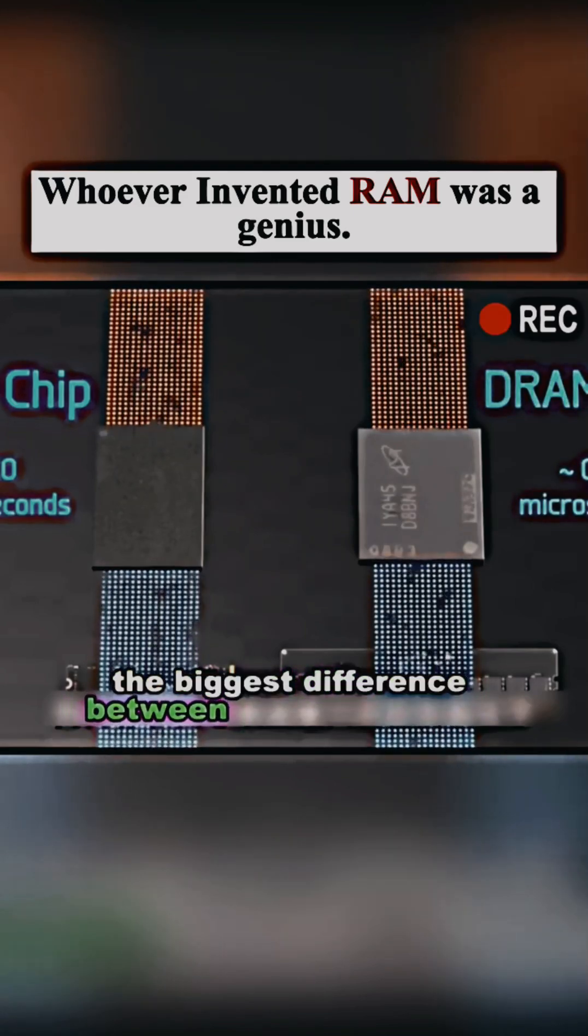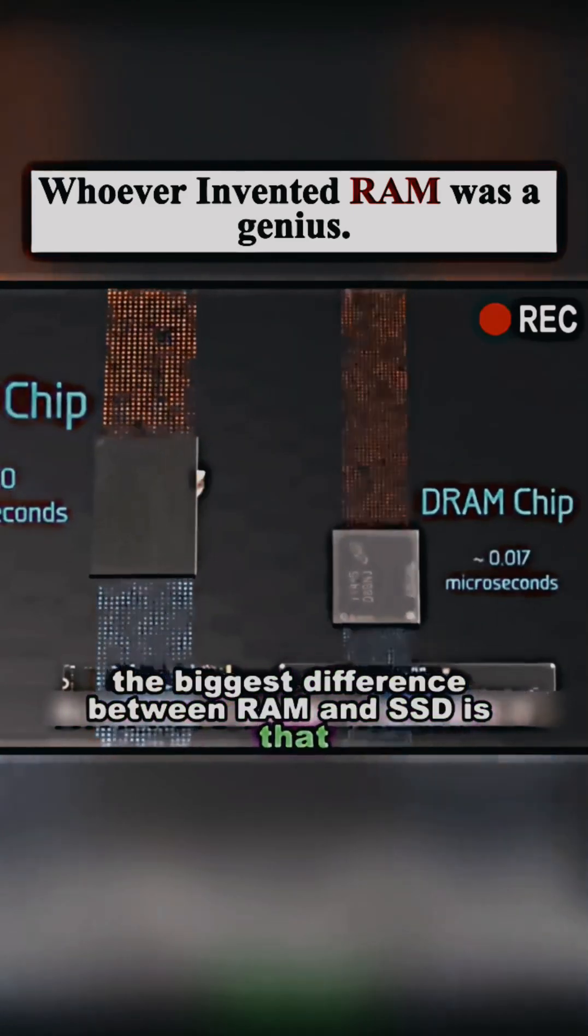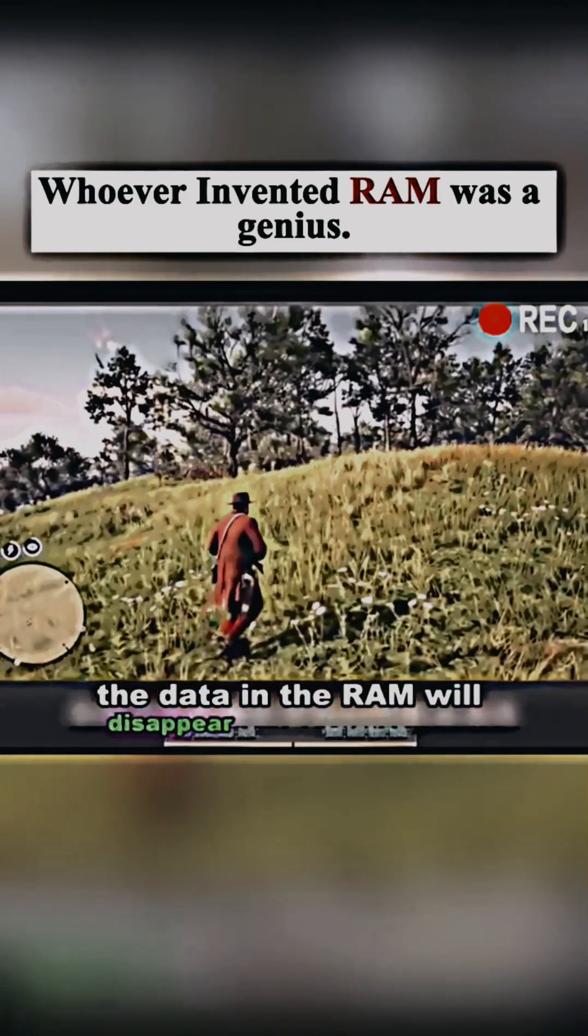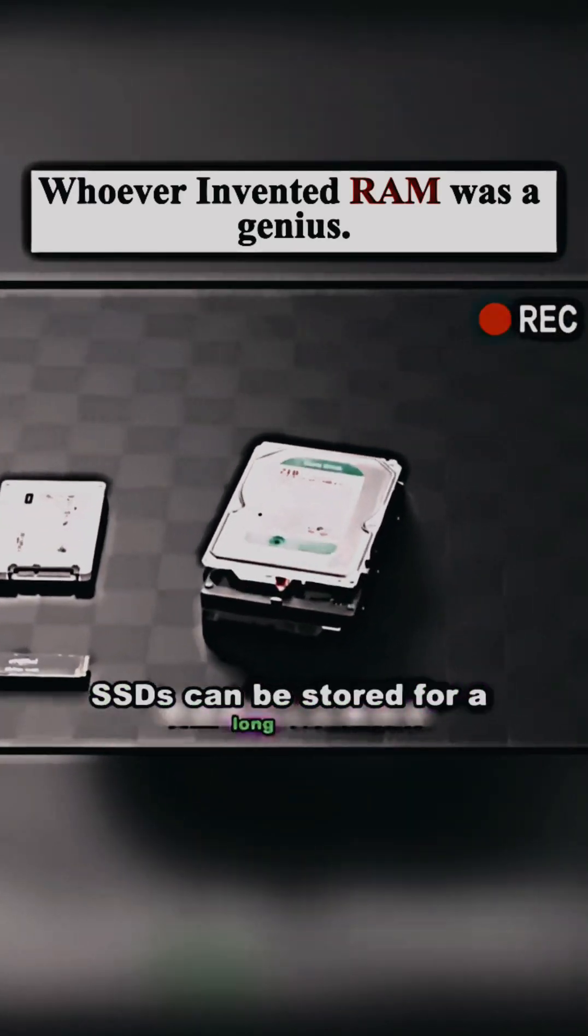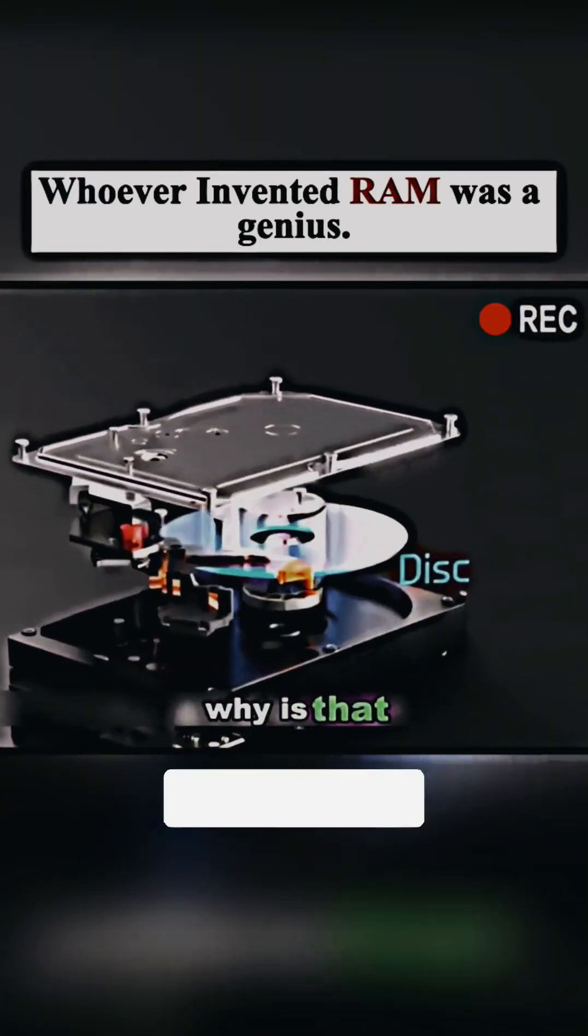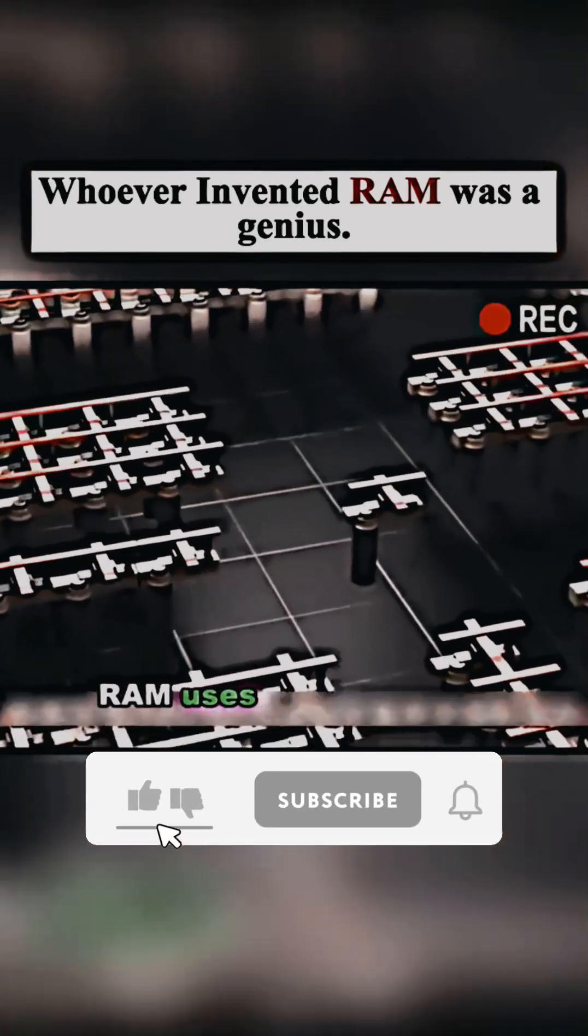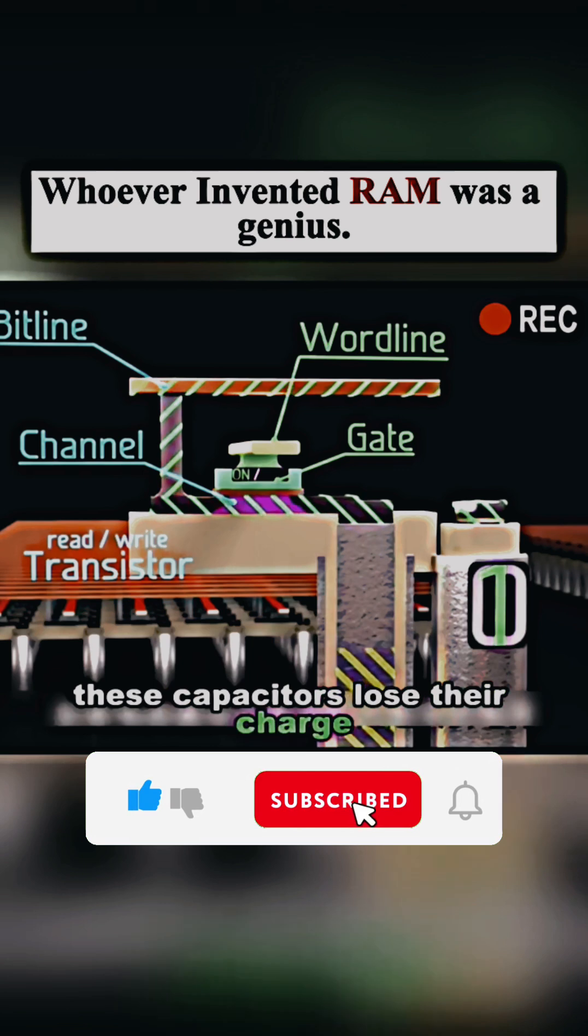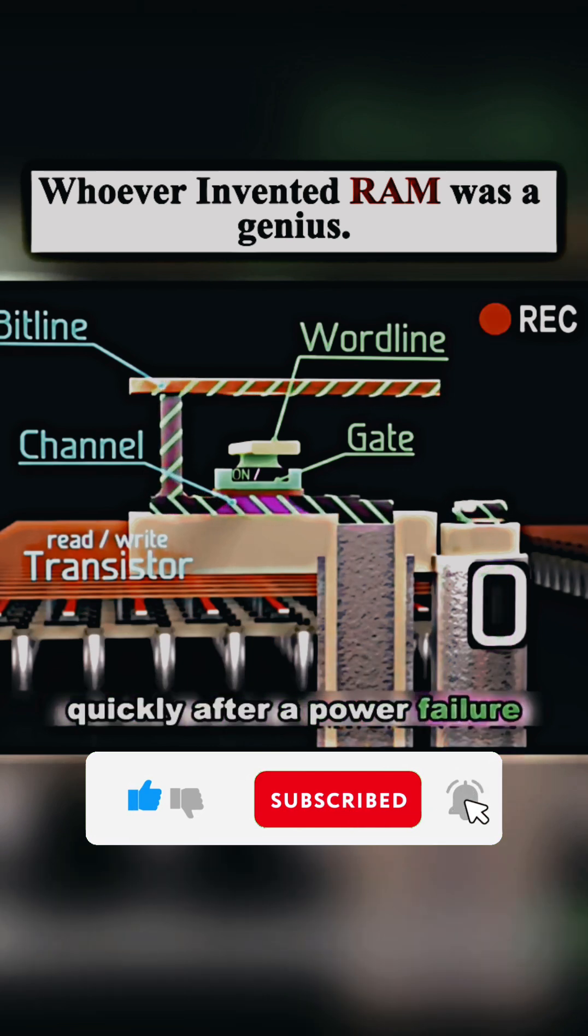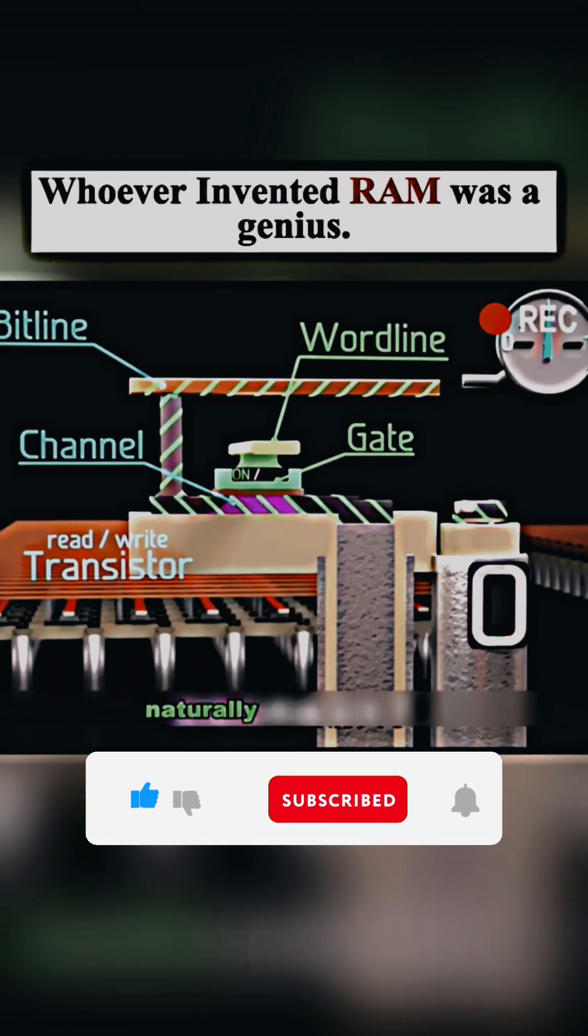The biggest difference between RAM and SSD is that the data in the RAM will disappear after power off. SSDs can be stored for a long time. Why is that? As we mentioned earlier, RAM uses capacitors to store data. These capacitors lose their charge quickly after a power failure, and the data naturally disappears.